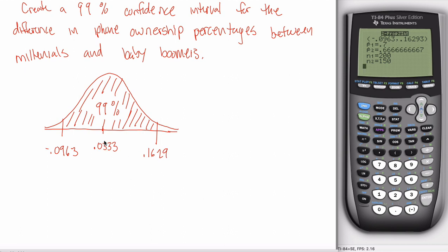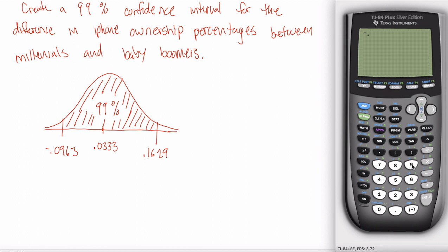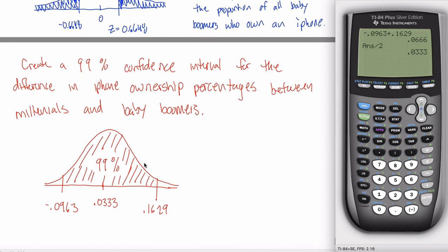And worth pointing out, another way you can get this is your point estimate is always halfway in between the bounds of your interval. So you could add up these two numbers, negative 0.0963 and then add to that positive 0.1629, and then divide that answer by 2 to find the number that's kind of halfway in between the two of these guys. And you get the same answer. So either by subtracting the two p-hats or by finding the number halfway in between, you get your point estimate.